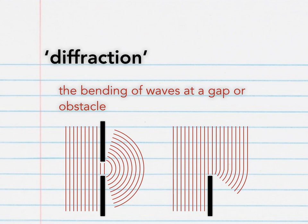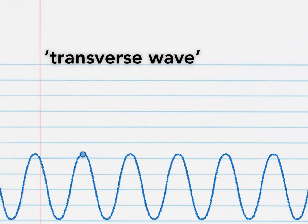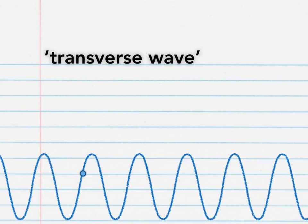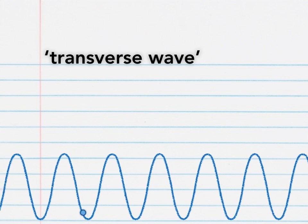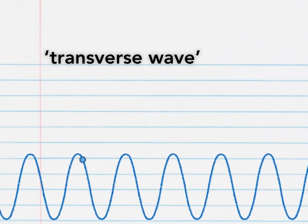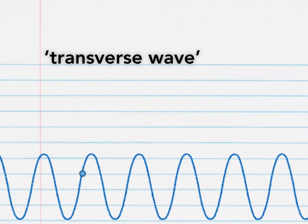Our next definition is transverse wave. Watch the animation, which should help you remember the definition. Here we have a water wave moving from left to right. The blue dot indicates the position of a single drop of water making up the wave.